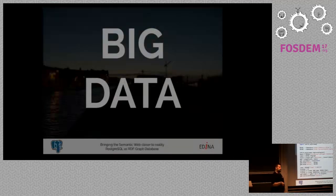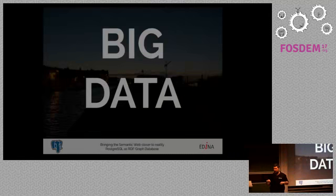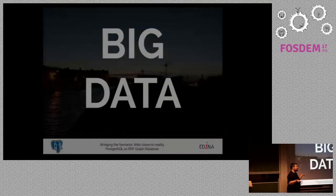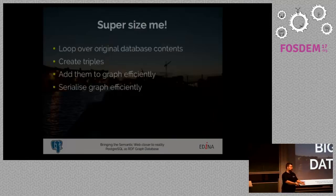Now the big question: we've only created two triples — how does this thing scale? Big data is just taking the same principles applied to 10 or 10,000 records and making it scale to 10 billion records. To supersize this, you have to loop over the original database contents in the JSONB table, create the triples in RDFlib and Python, then find an efficient way to add them to the graph.